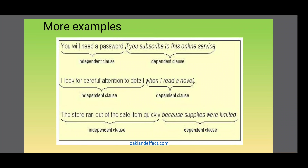The second sentence: 'I look for careful attention to detail when I read a novel.' The second part, 'when I read a novel,' is the subordinate clause, and the first part, 'I look for careful attention to detail,' stands on its own and is an independent clause. Likewise, the third sentence: 'The store ran out of the sale item quickly because supplies were limited.' The second part, 'because supplies were limited,' is the dependent clause, whereas the first part, 'the store ran out of the sale item quickly,' is the main clause or independent clause.